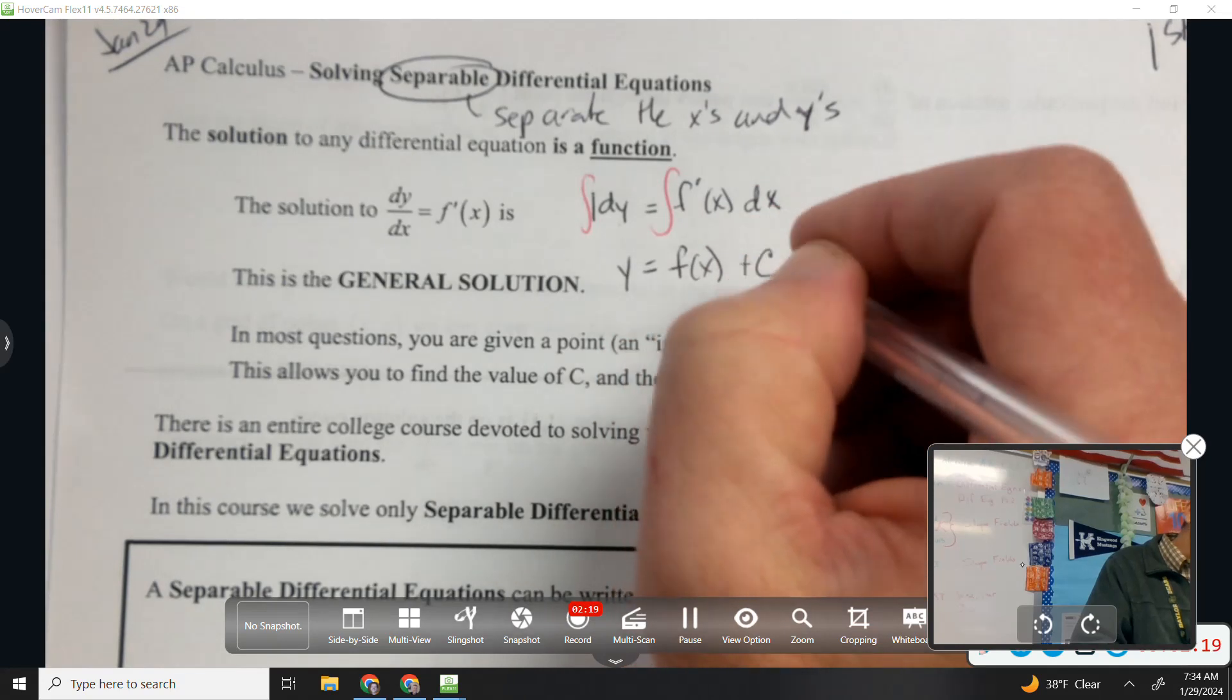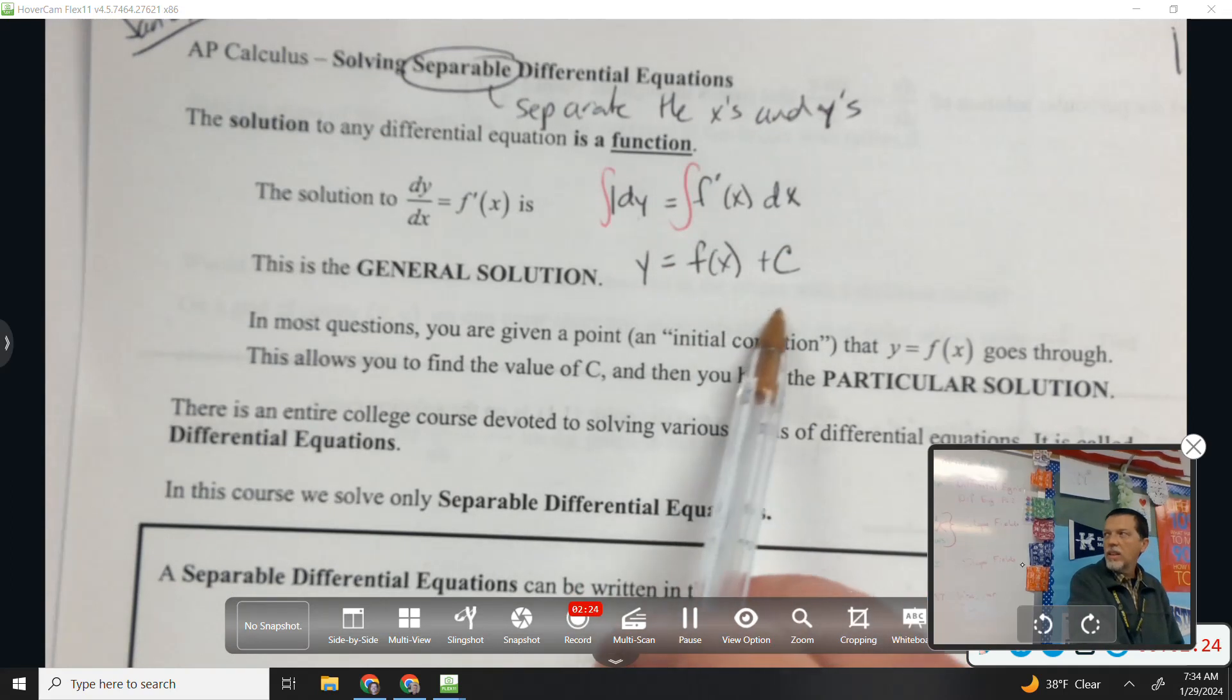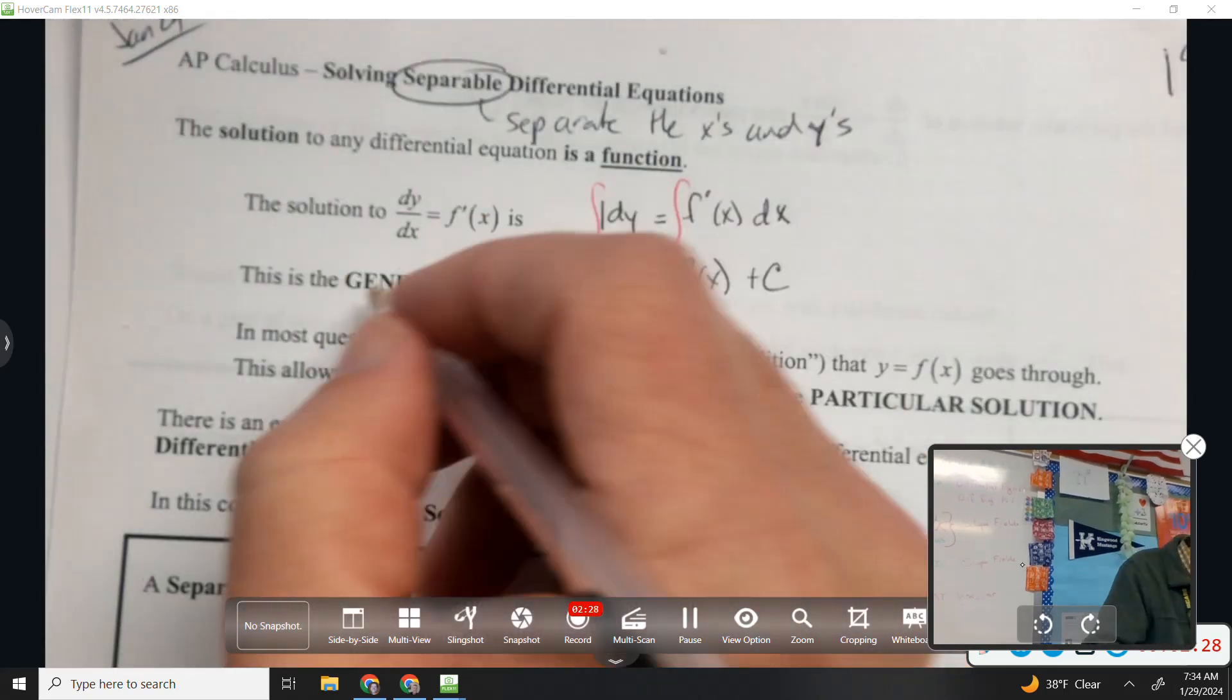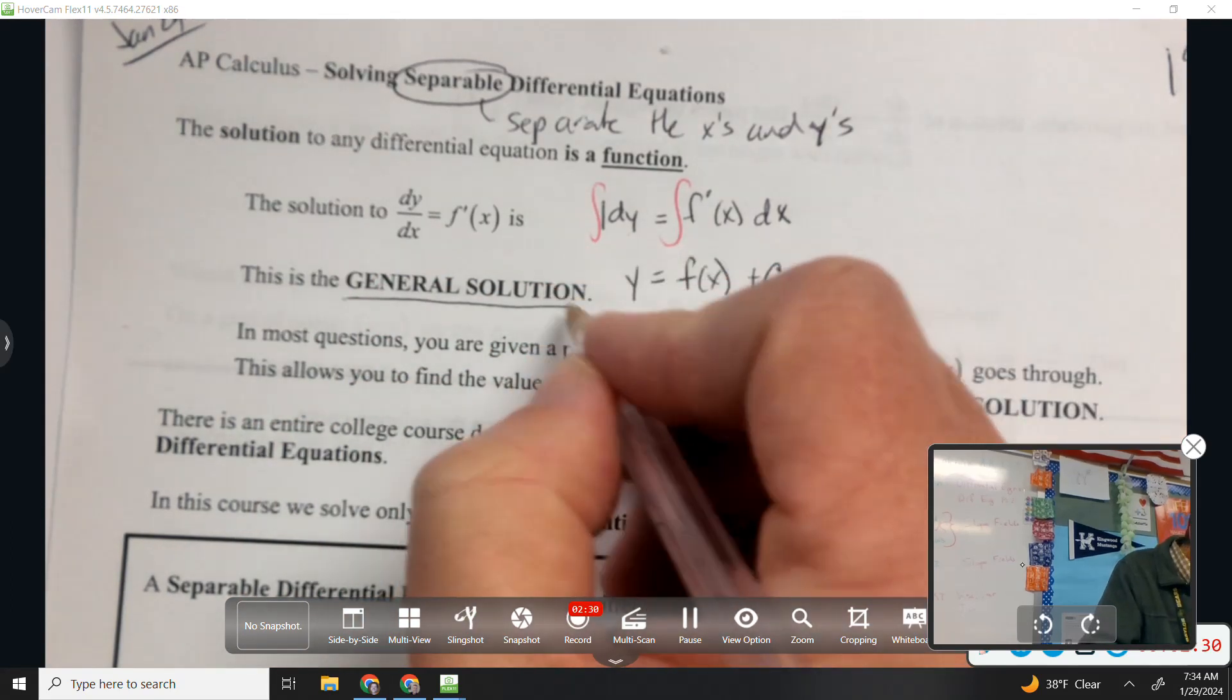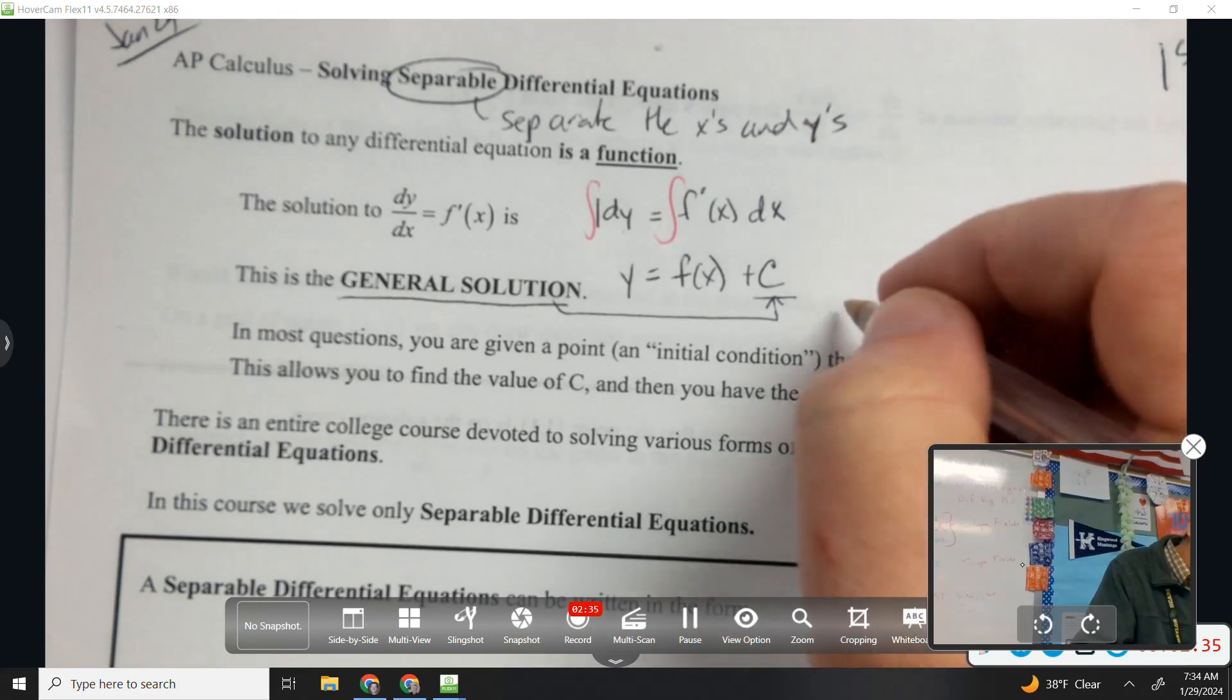And then we have a plus C on there, so all our answers will look something like that. This is called the general solution because of the plus C, as opposed to a particular solution.